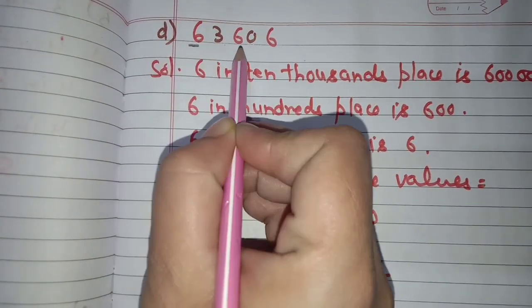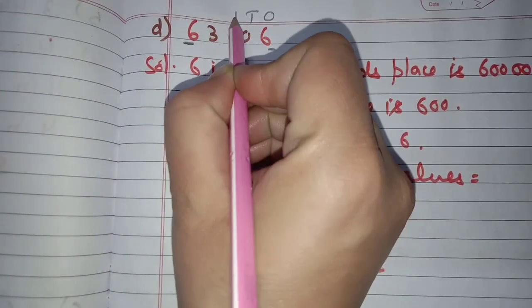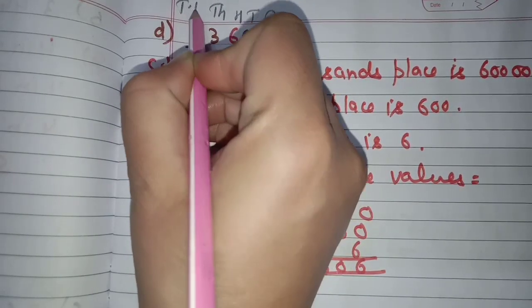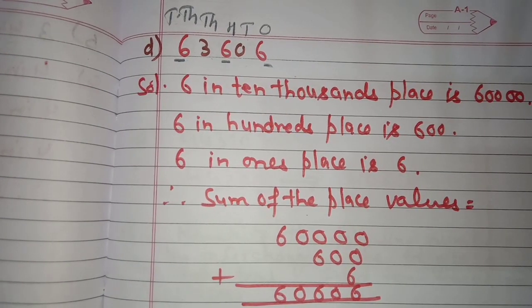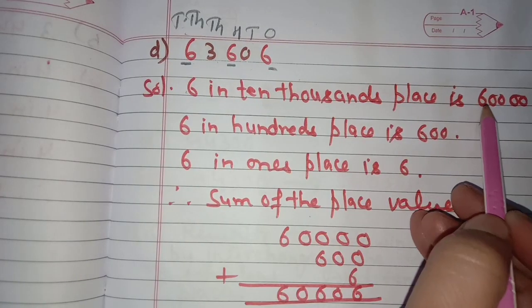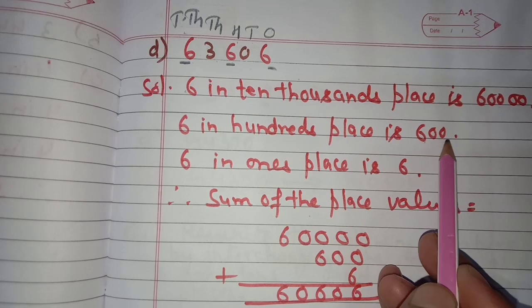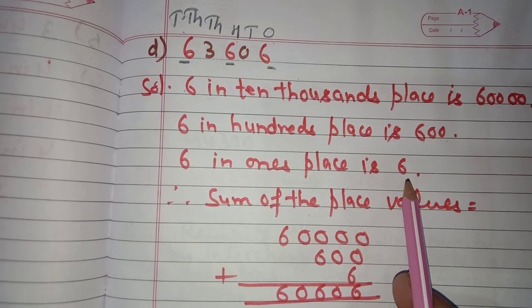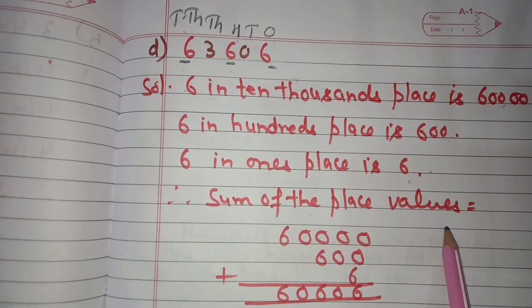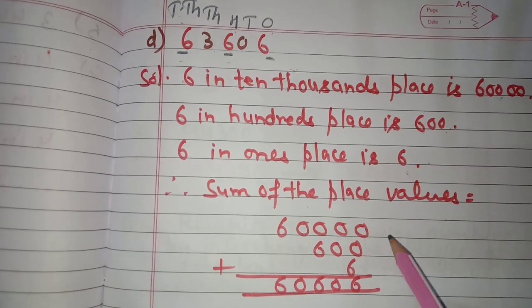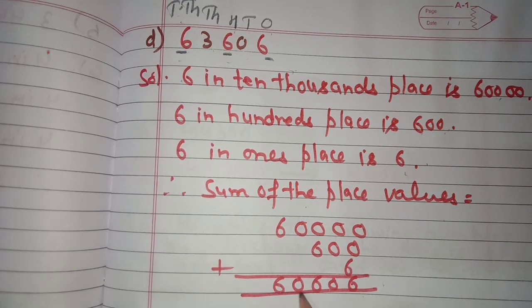Part d: 63,606 — find the place values of the three sixes. Six in ten thousands place is 60,000; six in hundreds place is 600; six in ones place is 6. Sum of all place values: 60,000 + 600 + 6 = 60,606 — sixty thousand six hundred six.